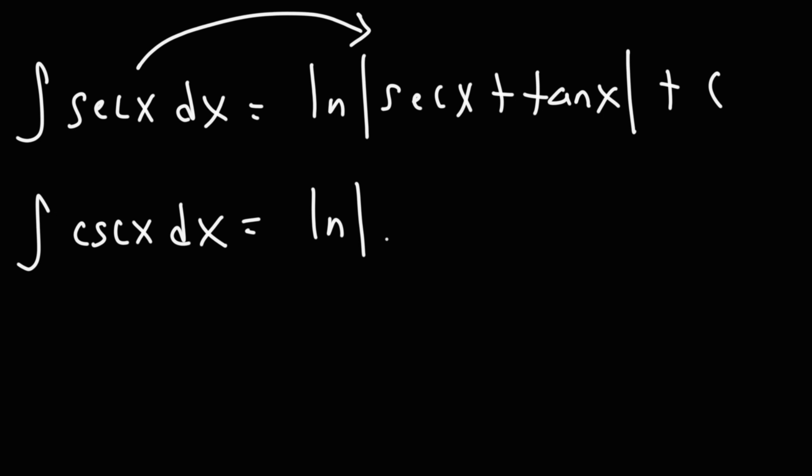The integral of cosecant x is ln of the absolute value of cosecant x minus cotangent x, plus c.